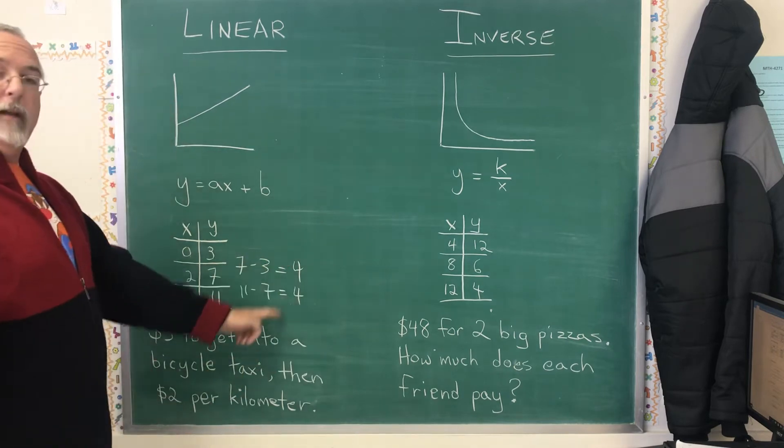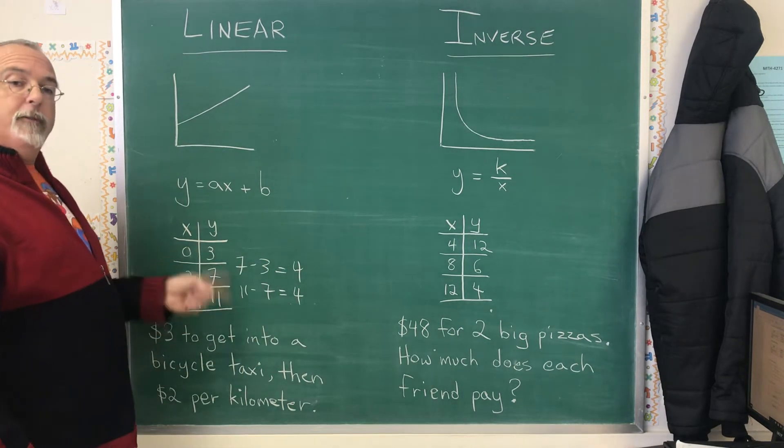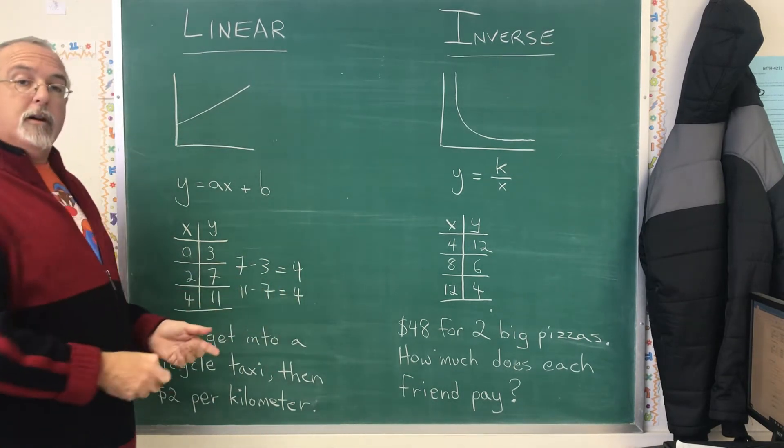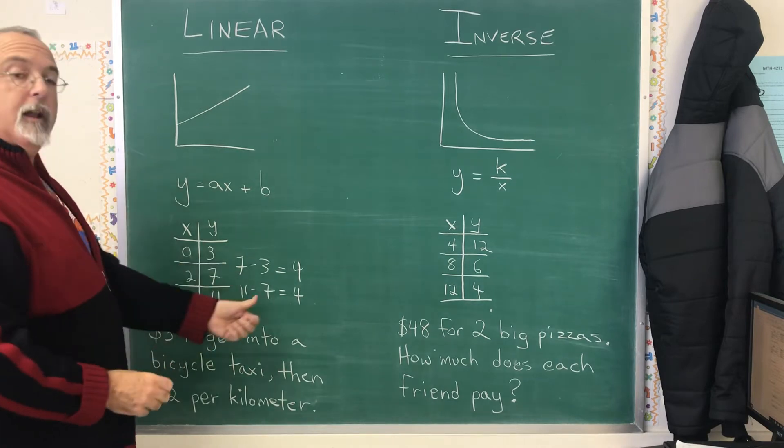When you keep on getting the same answer from the constant difference trick, that answer is the constant difference and it's telling you this is linear.